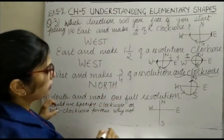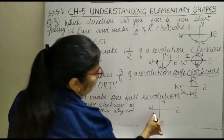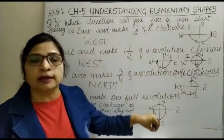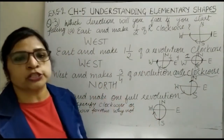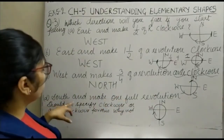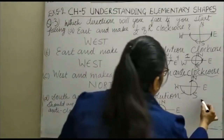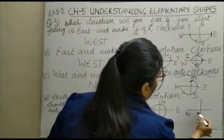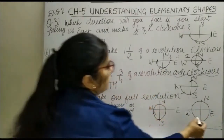Now the last question is very important. In the last question, it is said that you are in the south and you have covered one-fourth of a revolution. You can see here — this is your west, this is your east, and north. This is our clockwise direction and this is our anticlockwise direction.